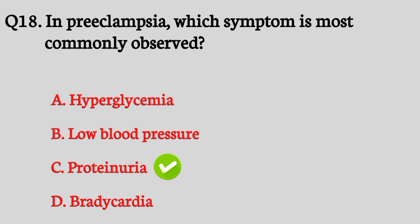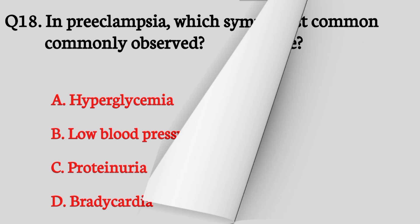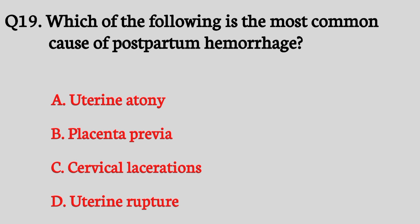Question number nineteen. Which is the most common cause of postpartum hemorrhage? The right answer is option A: Uterine atony.